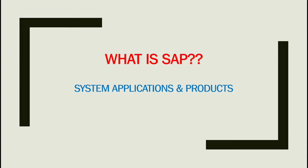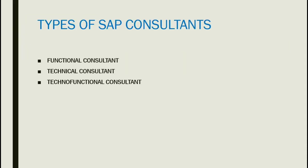First of all, we need to know what is SAP — System Application and Products in Data Processing. In a single line, it is a high-level business process which means integrating different types of modules in a single platform. That is SAP.